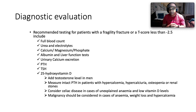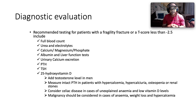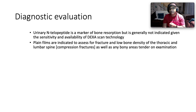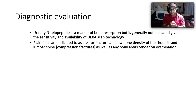In men, add a testosterone level. Measure intact PTH in patients with hypercalcemia, hypercalciuria, osteopenia, or renal stones. Consider celiac disease in cases of unexplained anemia and low vitamin D levels — check anti-gliadin, anti-endomysial, and anti-transglutaminase antibodies. Malignancy should be considered in cases of anemia, weight loss, and hypercalcemia. Urinary N-telopeptide is a marker of bone resorption but generally not indicated given DEXA availability. Plain films are indicated to assess for fracture and low bone density of the thoracic and lumbar spine.